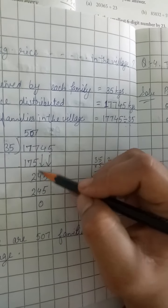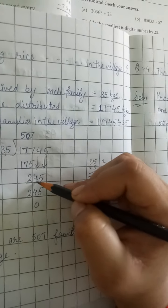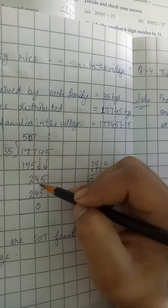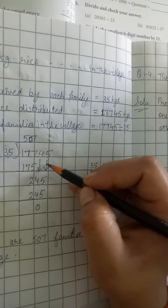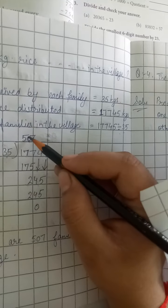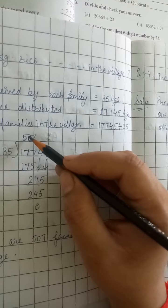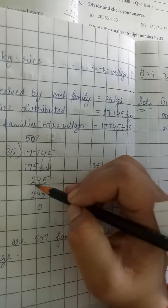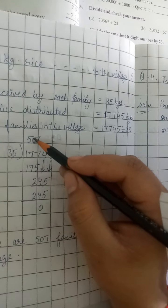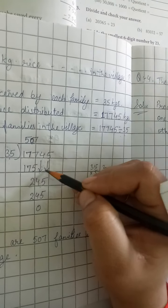We will bring down 4, but still this number is smaller than 35, so we will bring down the next number. But before that we will write 0, because this number is not divisible by 35. We will bring down 5.